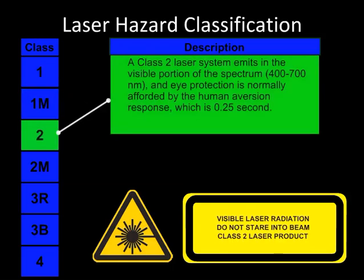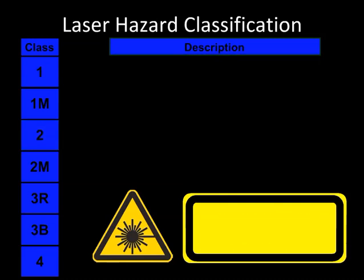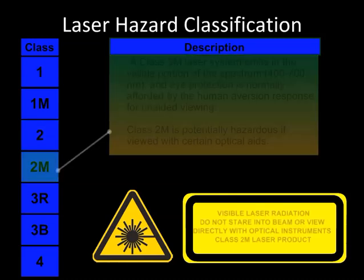Class 2: Emits visible light only and is not hazardous for accidental or momentary eye exposure. It is not normally considered a skin hazard. Class 2M: Emits visible light and is not hazardous for accidental or momentary eye exposure except when viewed through specific types of magnifying optics such as hand magnifiers or telescopes.